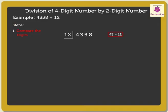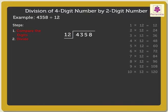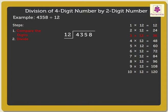Now, we can divide forty-three by twelve. Step two is to divide. As the divisor is twelve, we use the table of twelve to find a product which is equal to, or less than, and nearest to forty-three. So, the nearest product is thirty-six.